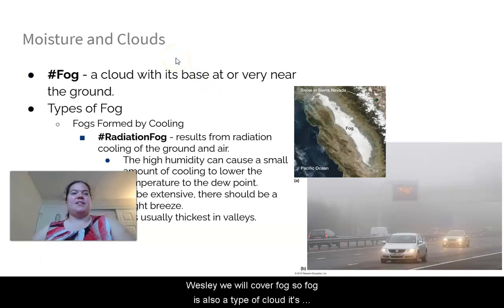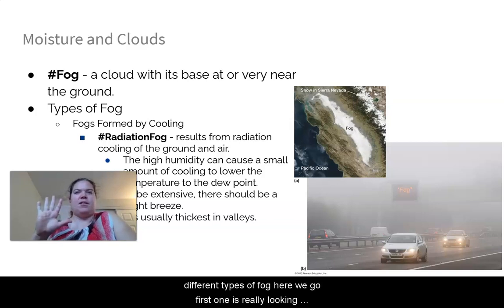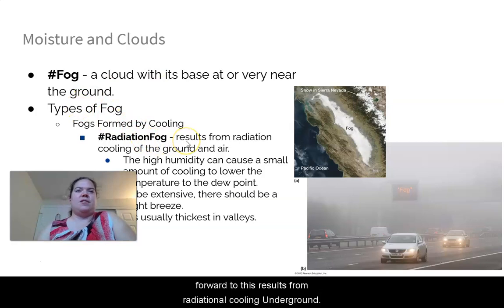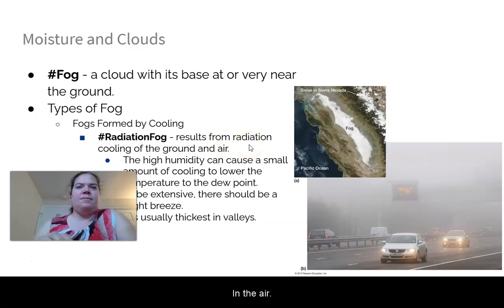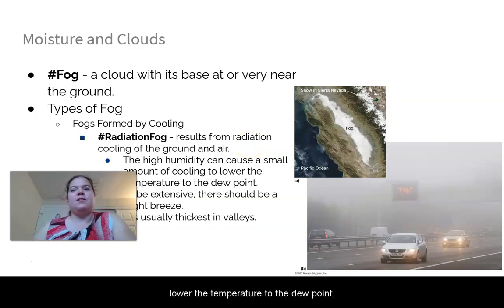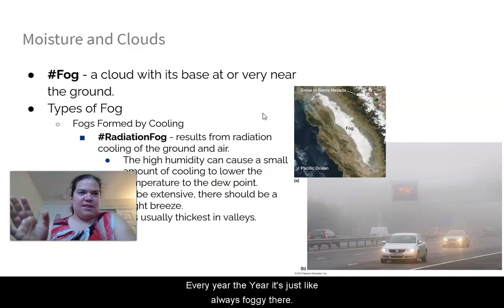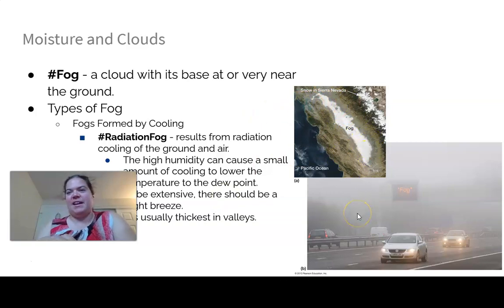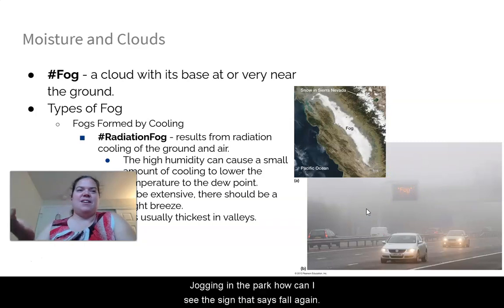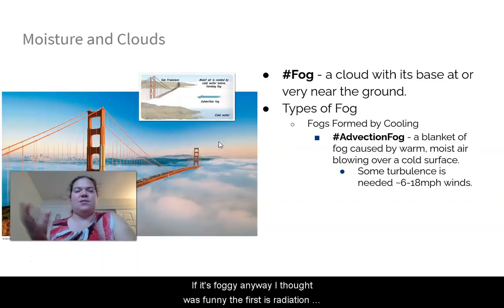Fog is also a type of cloud — just very near or at the ground. There are five types. First: radiation fog, which results from radiational cooling of the ground. High humidity causes a small amount of cooling to lower the temperature to the dew point. It's usually thickest in valleys and requires a slight breeze. Some valleys in California have fog almost every day of the year.